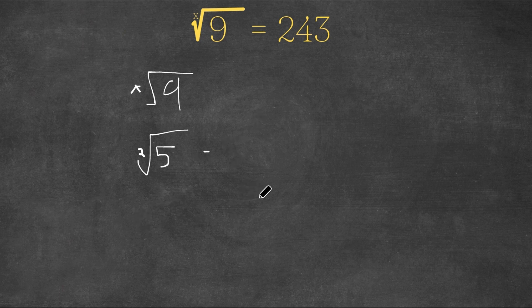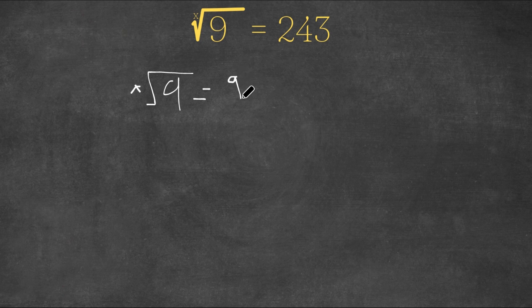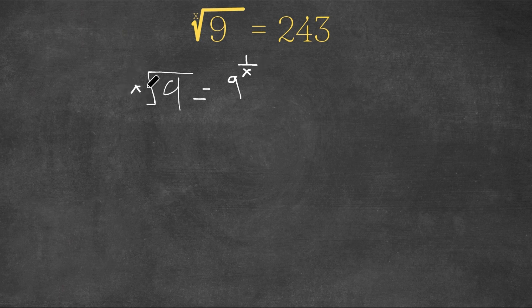So using this info, 9 to the x root, this is going to be 9 to the power of 1 over x. Because in all those other examples, we put 1 over the root.